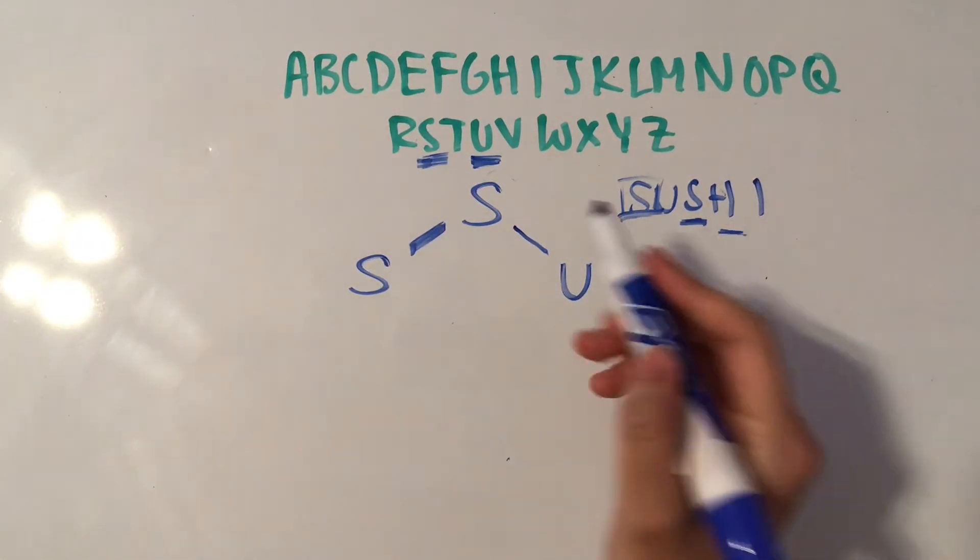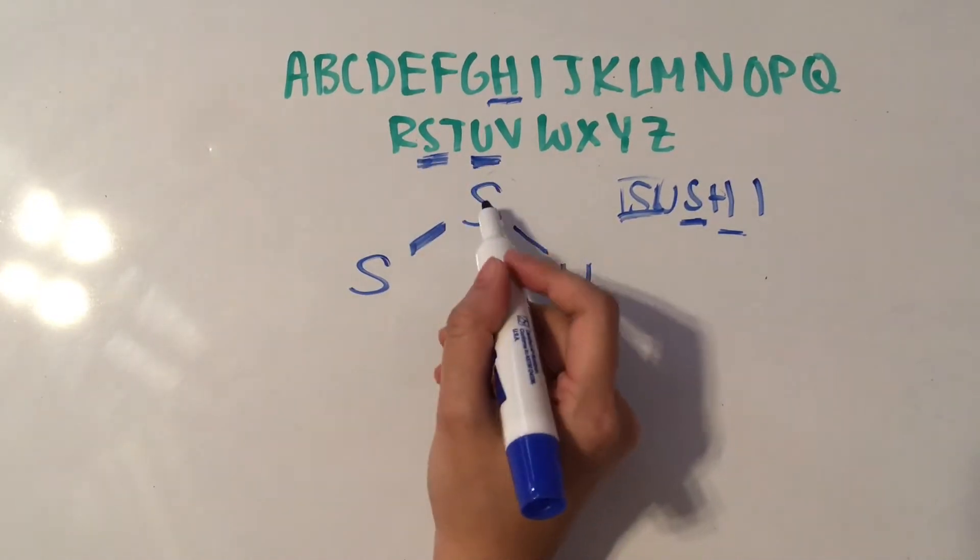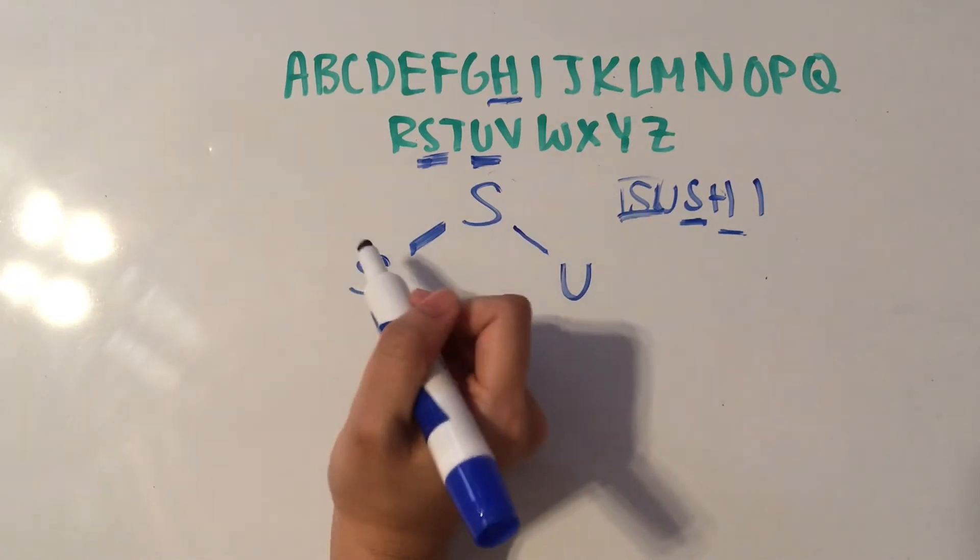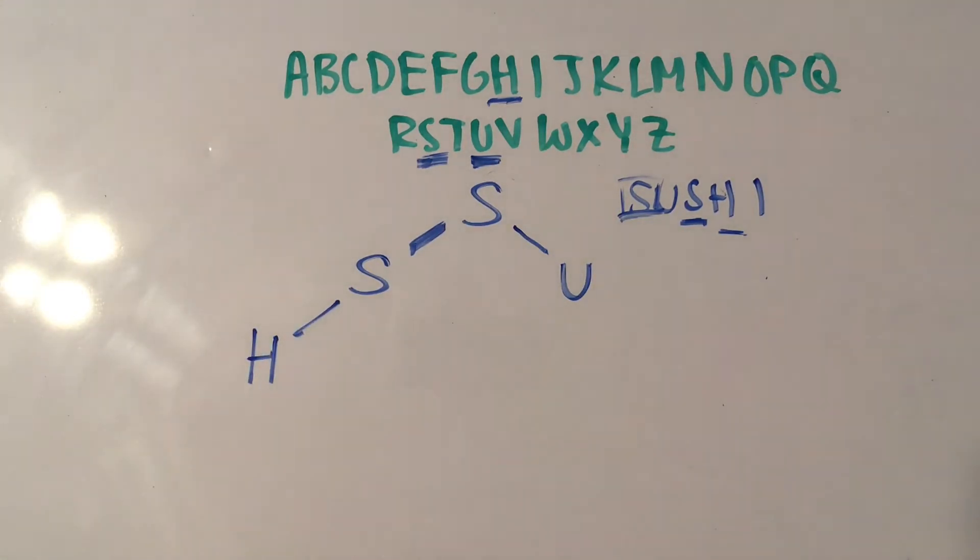Okay, so now we have H, which is over here, so it's before S in the alphabet. So it's before this first S, so we move to the left. And it's before this second S, so we move to the left again. And we put our H there.